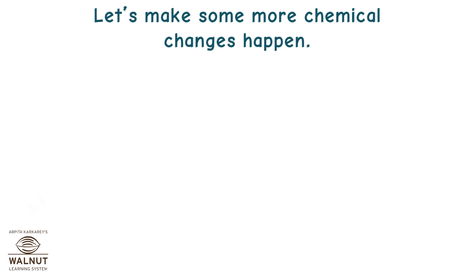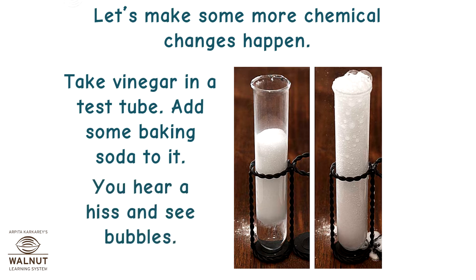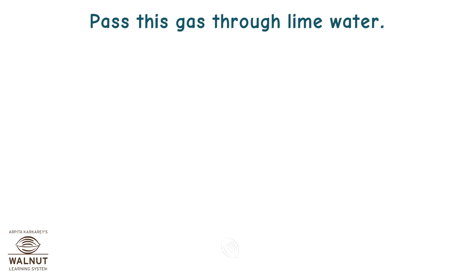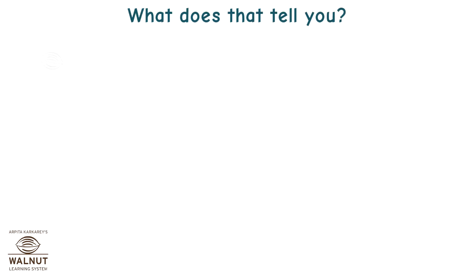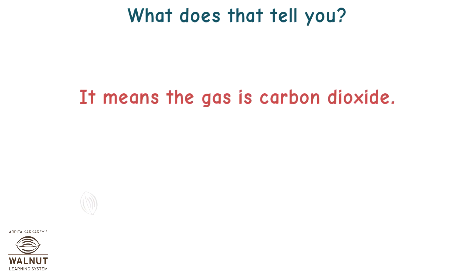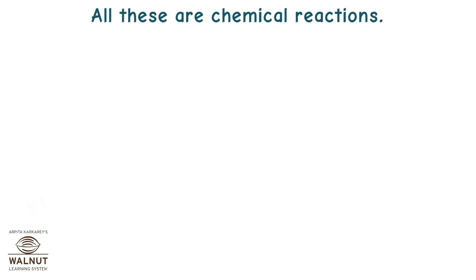Take vinegar in a test tube and add some baking soda to it. You hear a hiss and see bubbles. Pass this gas through lime water — the lime water turns milky. That tells you the gas is carbon dioxide. So the bubbles were of carbon dioxide gas. All of these are chemical reactions.